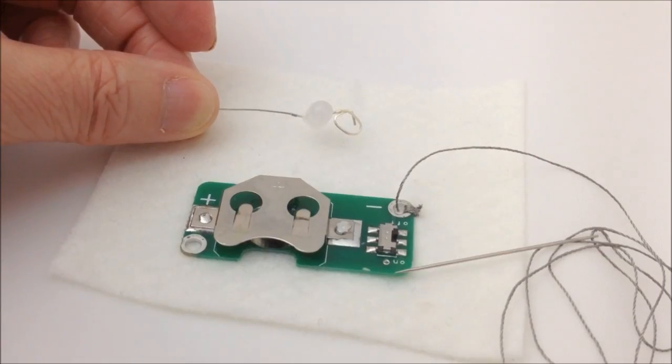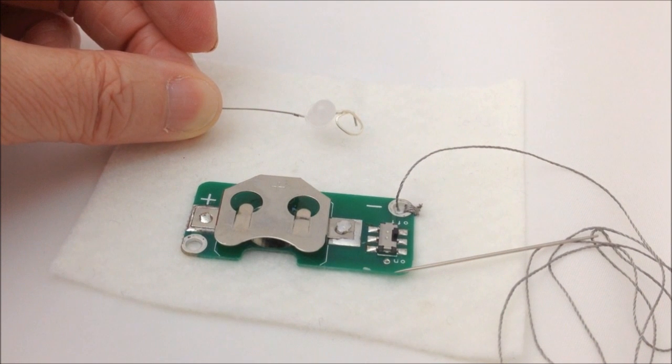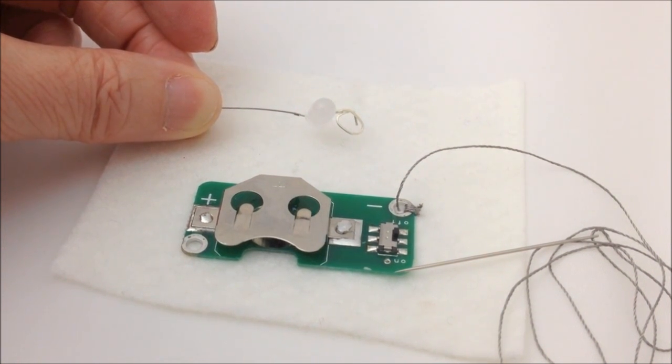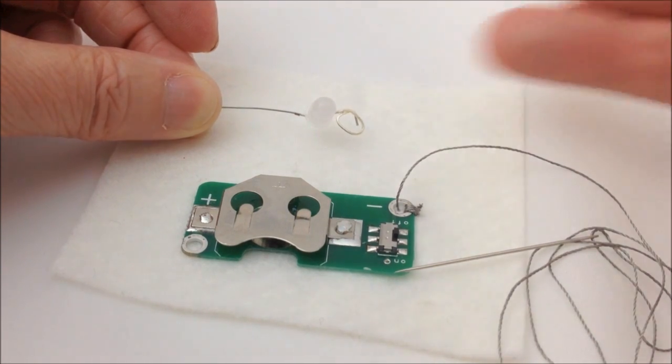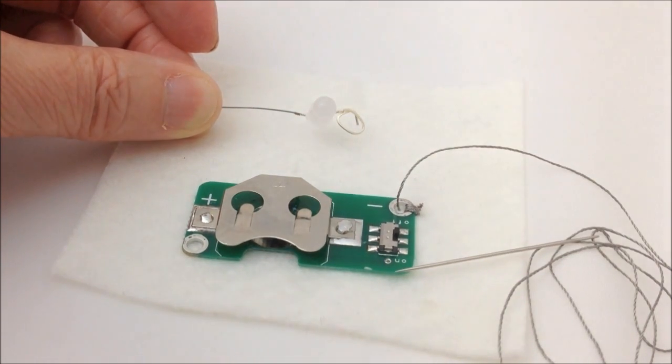You can twist both legs at the same time. I find it quite useful just to twist one leg at a time because that helps me to remember which leg I'm actually working with. So I know now that I've twisted my negative but I haven't twisted my positive.